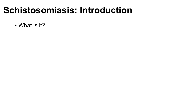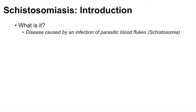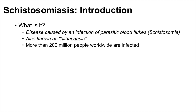So to begin, what is schistosomiasis? It is a disease caused by an infection of a parasitic blood fluke, or schistosoma. This disease is also known as bilharziasis, and it is estimated that more than 200 million people worldwide are infected with schistosomiasis, and about 200,000 deaths are attributed to schistosomiasis per year.